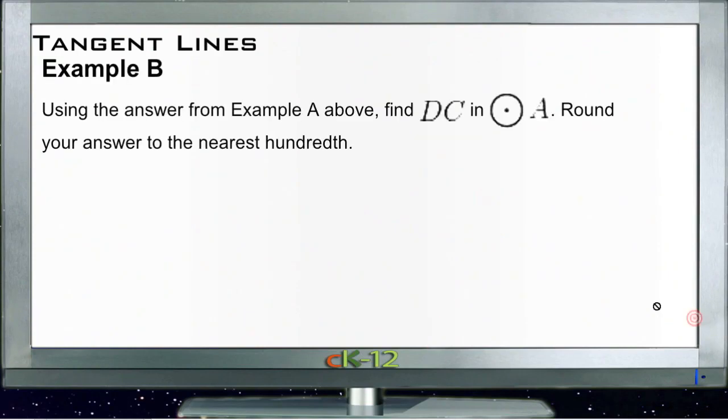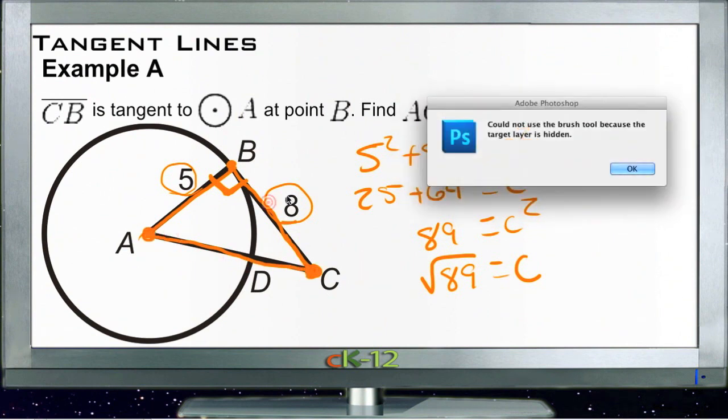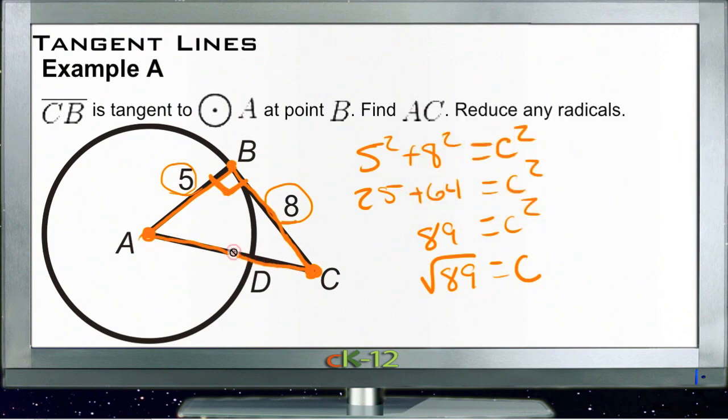Now let's take a look at example B. Example B says, using the answer from example A, find DC in circle A, and then round your answer to the nearest hundredth. So let's take the difference between the radius of the circle and that whole length. So from A to D, if we took that out of AC, all that's left would be DC, that short section.